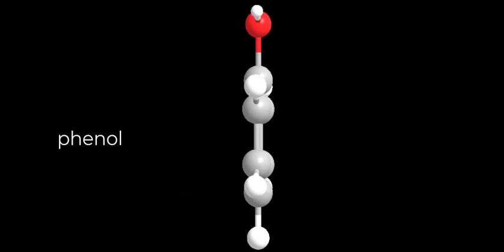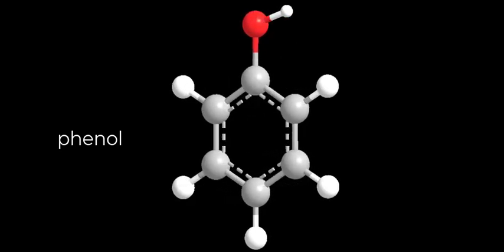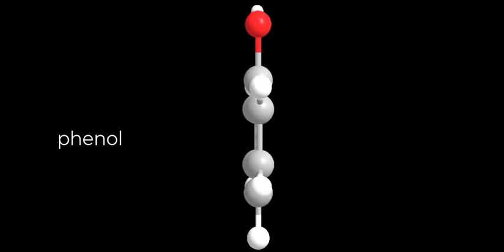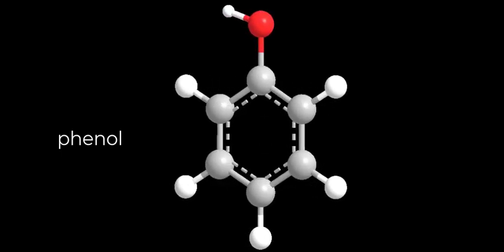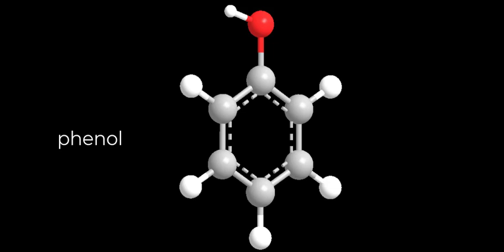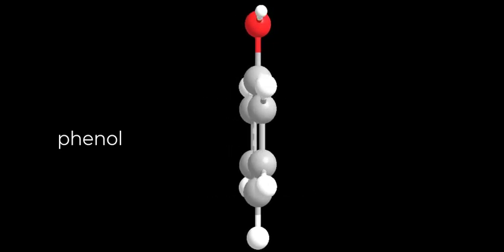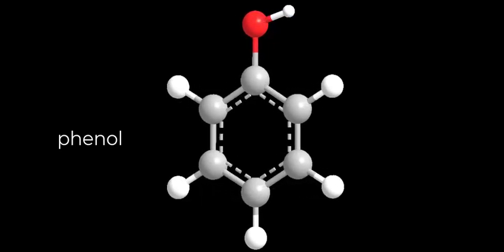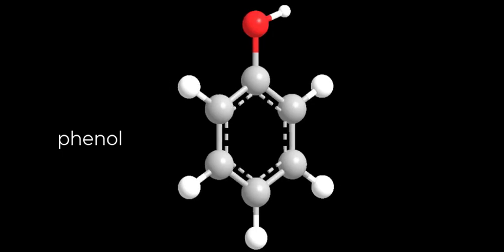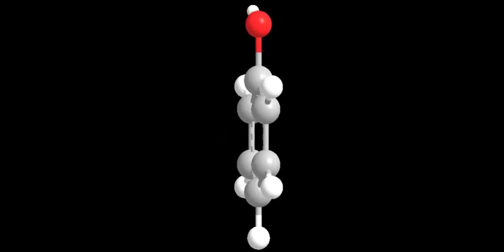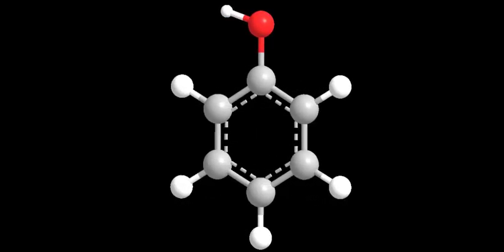And this is a model for phenol. Notice that those dashed lines are supposed to represent the circle for an aromatic ring, or that could be considered an alternating pattern of double bond, single bond, double bond, single bond around the ring. Notice the flat aromatic ring of phenol.